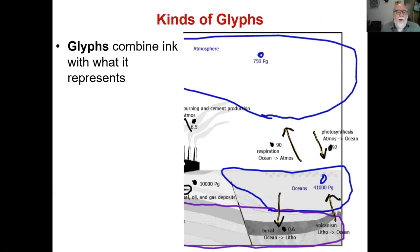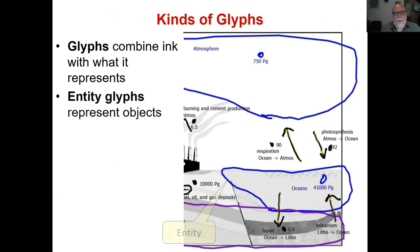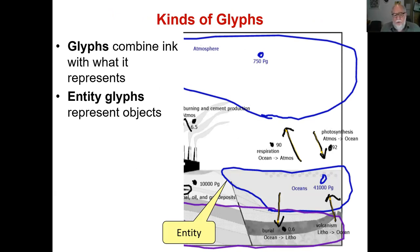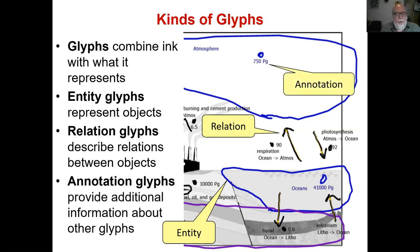A glyph combines both ink and what it represents. This is from an early worksheet done in Brad Sageman's class for the carbon cycle. There are entity glyphs representing objects — the ocean is an example of an entity glyph. Relation glyphs describe relations — here it's a flow of carbon dioxide from the ocean to the atmosphere. And annotation glyphs provide additional information — so there are 750 petatons of carbon dioxide in the atmosphere, according to this sketch. It's a very flexible visual language.